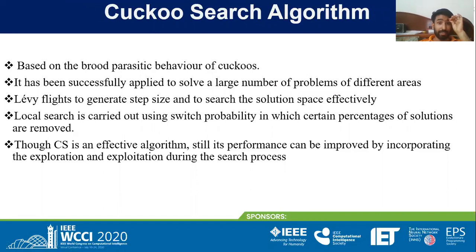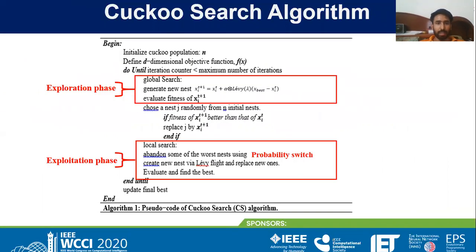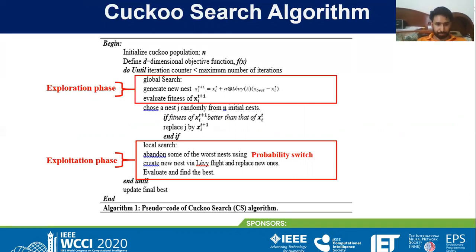In the present work we deal with the Cuckoo Search Algorithm, based upon the brood-parasitic behavior of cuckoo species found in nature. The algorithm has been applied to a large number of optimization problems and has proven to be a very promising algorithm. It uses Lévy flights to generate the step size for the global search phase, and the local search phase is controlled by a switching probability. The pseudocode consists of an exploration phase governed by the global search equation using a Lévy flight-based component, and a second exploitation phase governed by the probability switch, where new solutions are generated using either Lévy flights or a random solution.